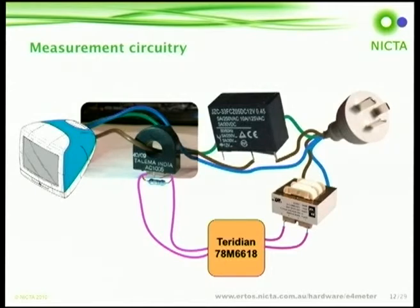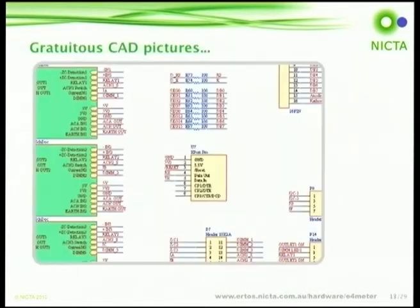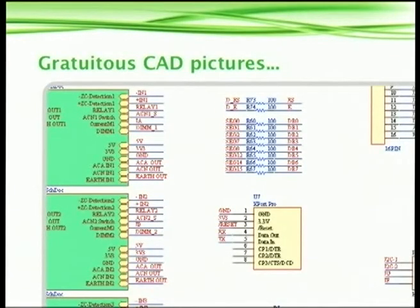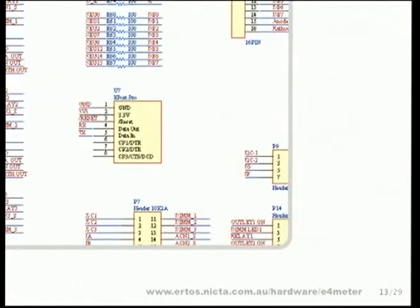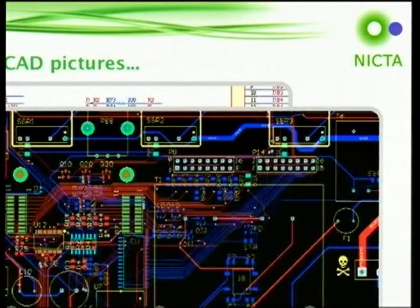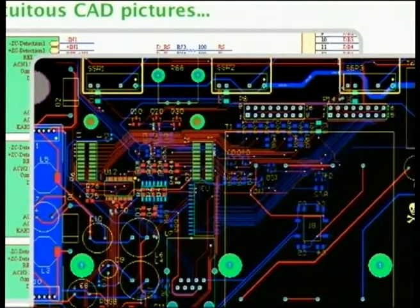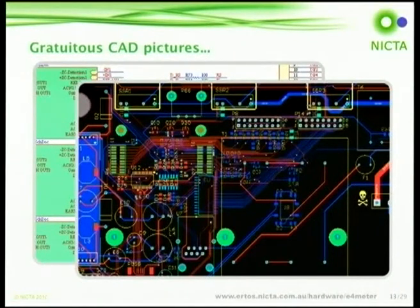We didn't use open source tools to design the PCB for similar reasons to what was described before - basically there's nothing out there that's free. So we used a tool called Altium, which we're familiar with, and we didn't want to expend the time to learn other tools. This is just a couple of pictures of the PCB design that we came up with to solve the problem. I'm going to hand over to Bernard now, who's going to go into some of the software we used on the device.